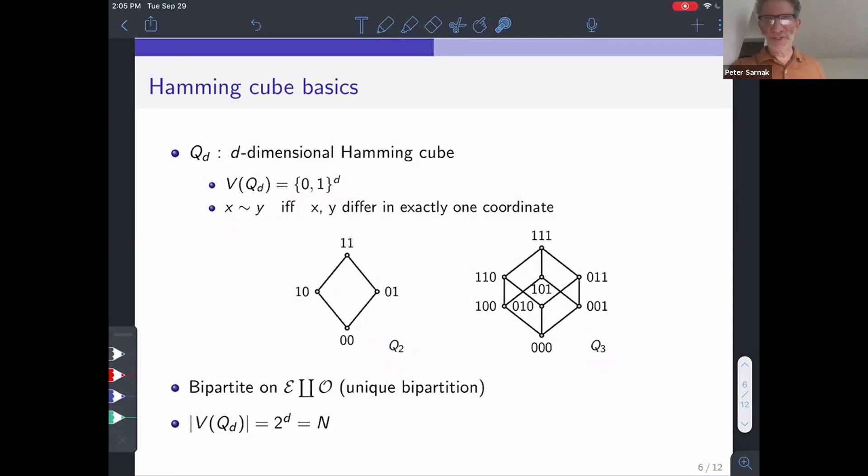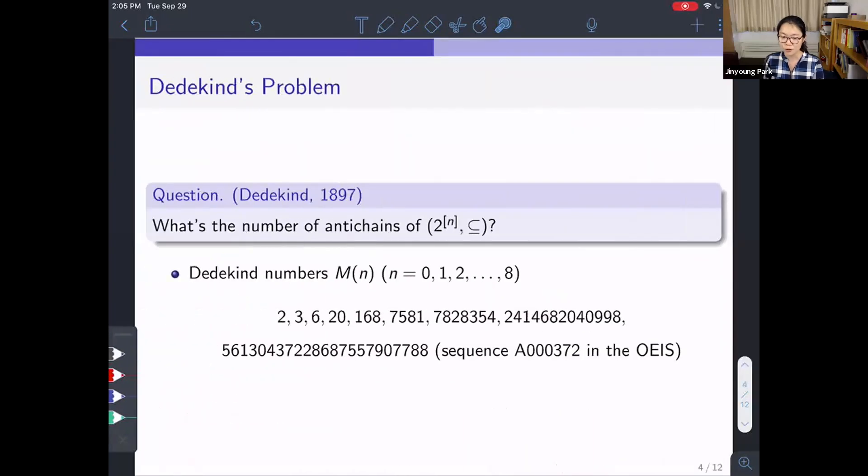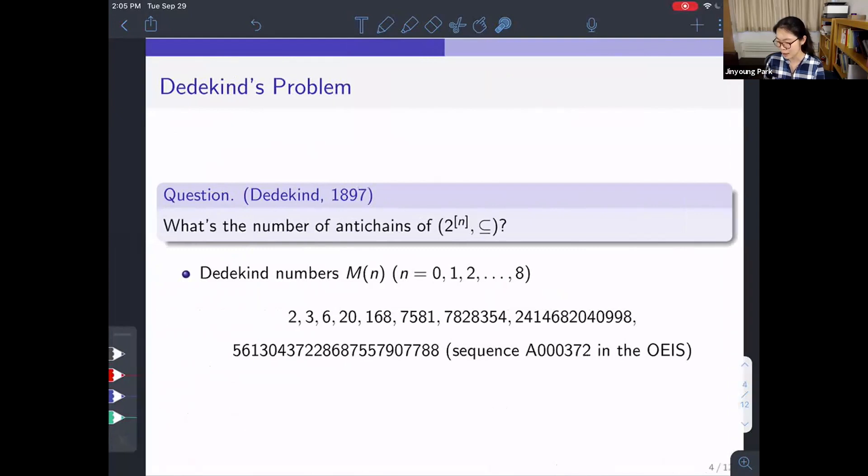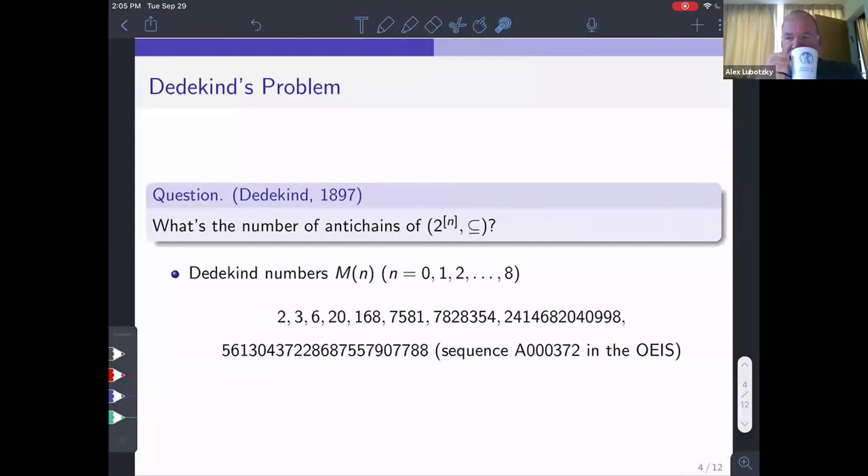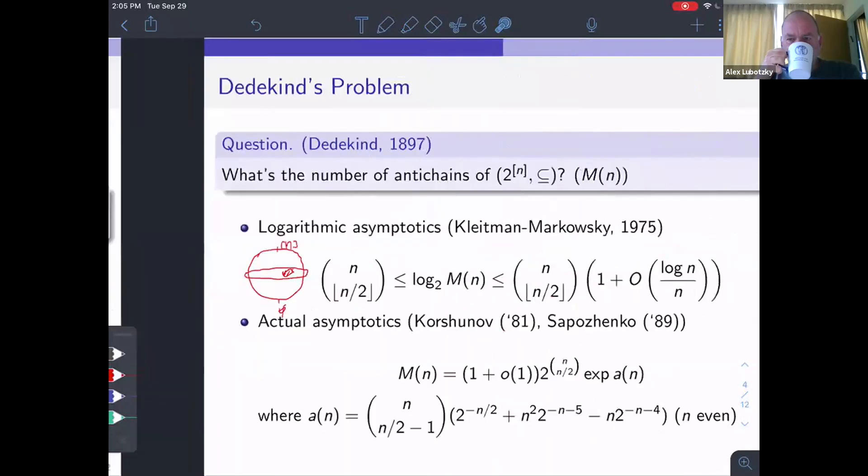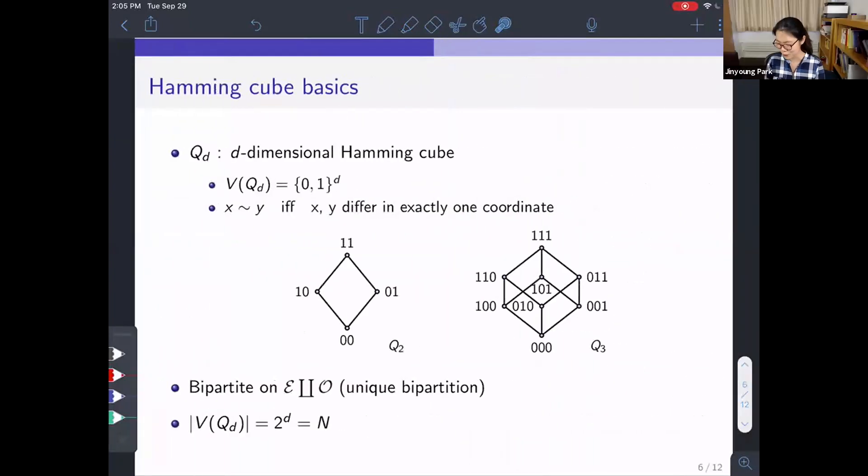Sorry, could I ask a question? What was Dedekind's interest? Oh, so as far as I know, he wanted to count the number of monotone Boolean functions in n variables. And here counting antichains is one of the variant. Okay. Thank you for the question.